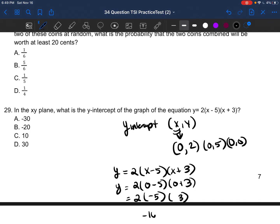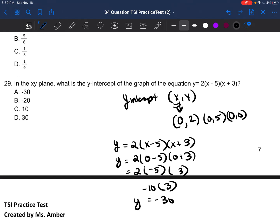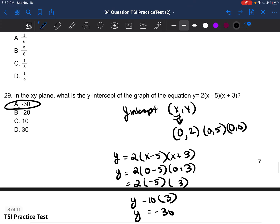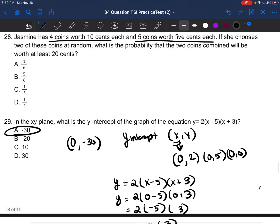So it's 2 times (0 minus 5) times (0 plus 3). Zero minus five is negative five, and zero plus three is three. And then we're going to go ahead and multiply. Two times negative five is negative 10. Negative 10 times three is negative 30. So Y is going to be equal to negative 30. So our answer is going to be A. So in terms of a point, the Y intercept can be (0, -30). And in this case, that's what it would be. So if you're ever asked on your ACCUPLACER or your TSI test to find the Y intercept, just plug in zero into the equation for X and you'll be able to figure out what Y is equal to.